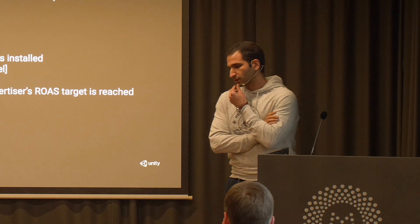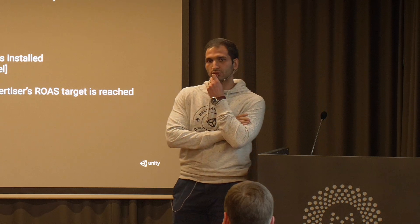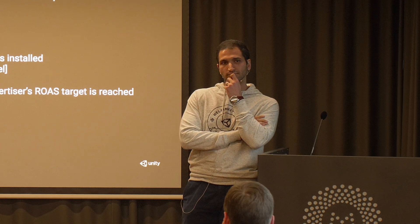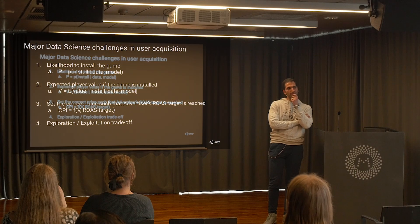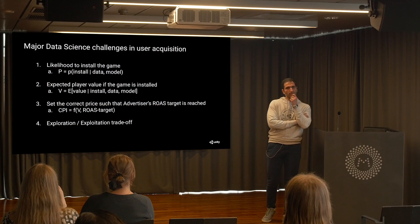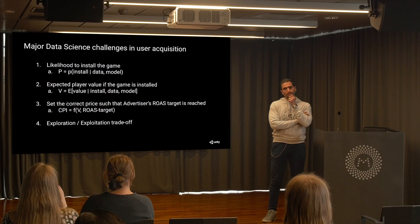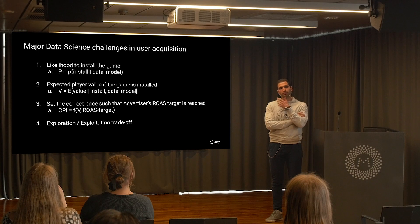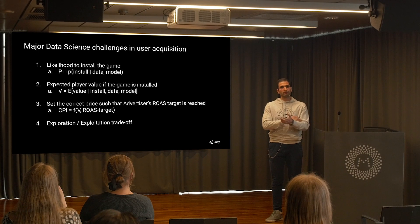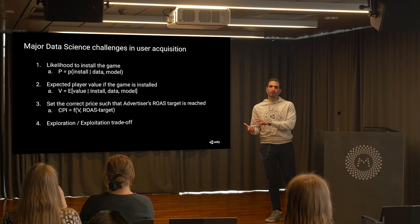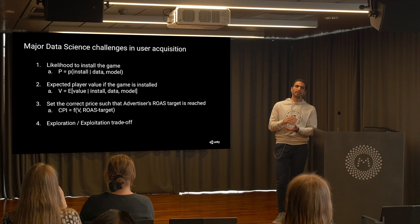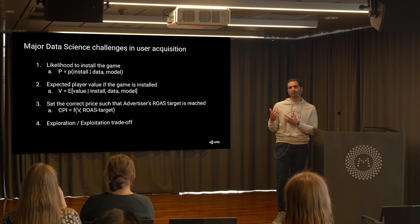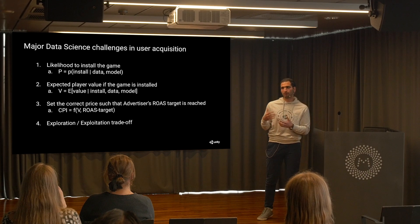What are the major data science problems we are trying to solve here at Unity? The main thing is that from the publisher and Unity perspective, we need to calculate the probability of installing this ad given that we show it to the current user — because we are only paid if the game is installed, so we need to be pretty accurate in calculating that probability.